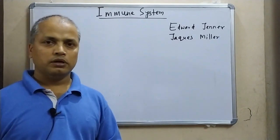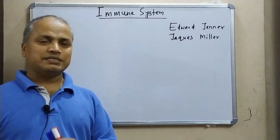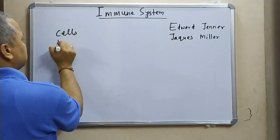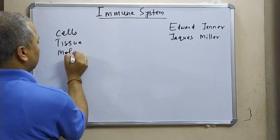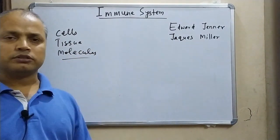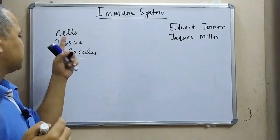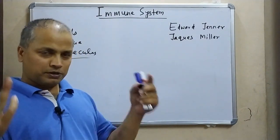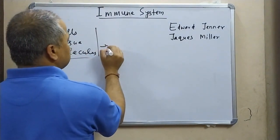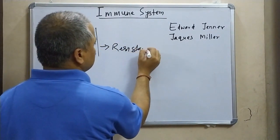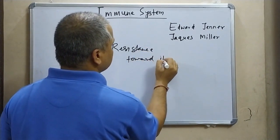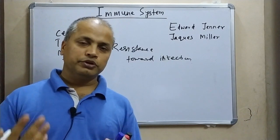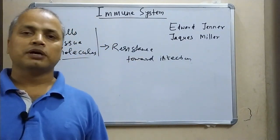First, we should understand what the immune system is and what its purpose is. The immune system is a system composed of cells, tissues, molecules, chemical substances, and proteins. The purpose of these components is to give us resistance towards infection. These are the components which give us immunity — immunity means resistance towards infections or infectious particles.